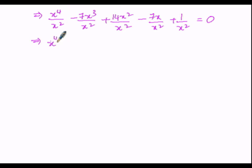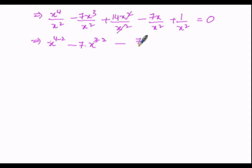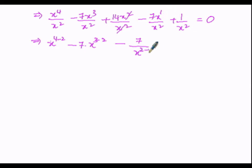x to the power of 4 minus 2, and in the similar manner for the second term, x to the power of 3 minus 2. Whereas here x square and x square cancel. Then minus 7 divided by x to the power of 1 divided by x to the power of 2 — here n is greater than m — so we write 1 by x to the power of n minus m, that is 2 minus 1 in the denominator, plus 1 by x square equals 0.